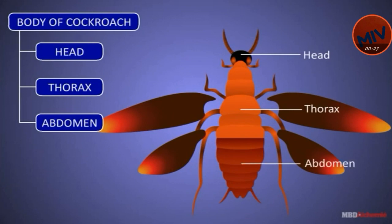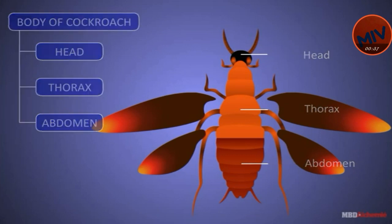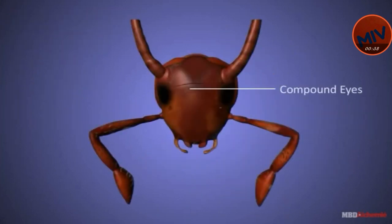The head is small, triangular and hypognathous. It is attached to the thorax by a narrow and flexible neck. Compound Eyes: These are a pair of large, sessile eyes, black in color and located on each dorsolateral side of the head.